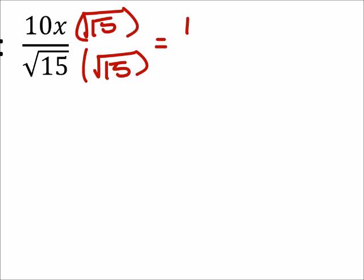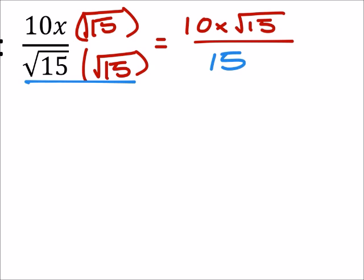So then I've got 10x times the square root of 15, and in the denominator I've got the square root of 15 squared. So that's just going to give us a 15 there.